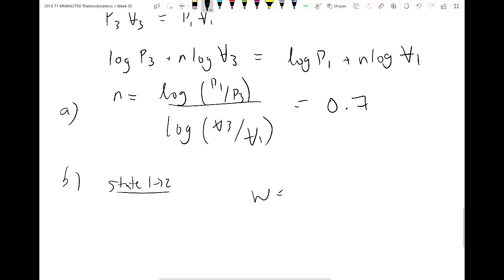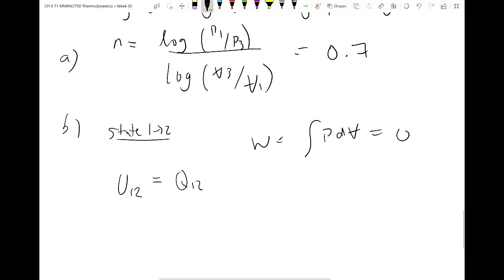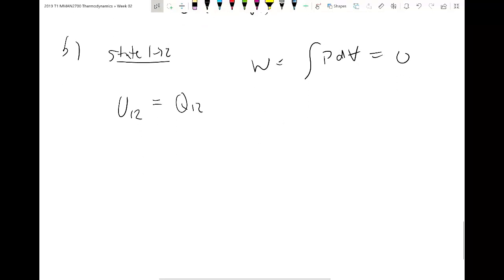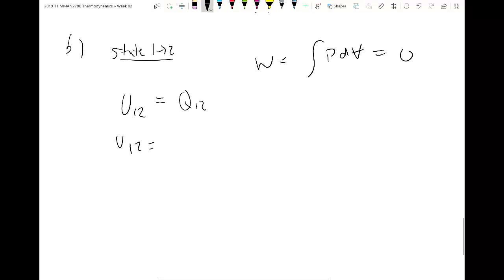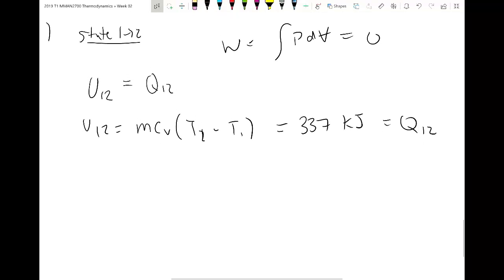So it's an isochoric process. And so what that means is the work is equal to zero. So remember that work is equal to the integral of P dV. There's no change in volume, so the work term becomes zero. So knowing our first law, we can say that the internal energy is equal to the heat transfer. So the easiest way to go about this is to use our MC delta T. So MC V T2 minus T1. And if you put in the numbers that we found earlier, you should end up with something around 337 kilojoules. And we know that that would be the same as the internal energy and the heat transfer. So that's all we need from state one to two.